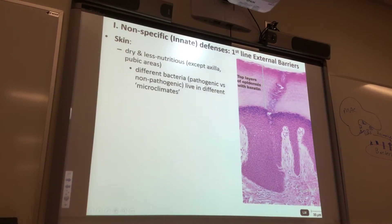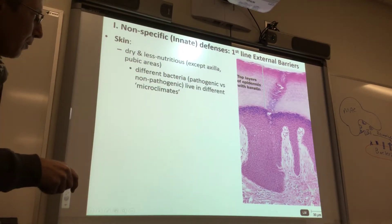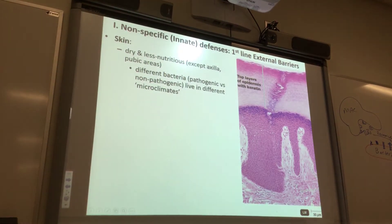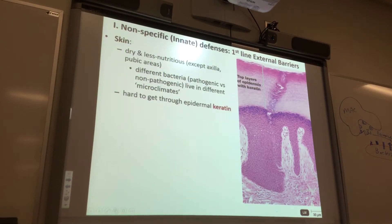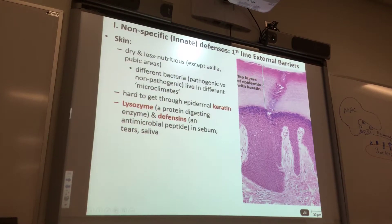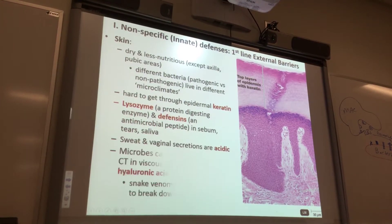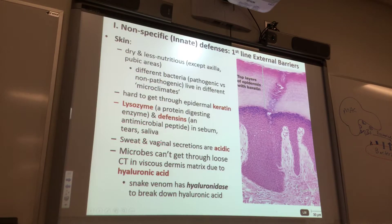Here's the epidermis — the top layers. This is all epidermis too, and then this stuff is dermis. You can see the dermal papillae pushing up into the epidermis. This tells you non-specific defenses — our first line of defense is the skin. It's dry, doesn't have a lot of nutrients for bacteria, it's hard to get through the keratin. We talked about lysozyme, sweat, and vaginal secretions are acidic — microbes don't like that.